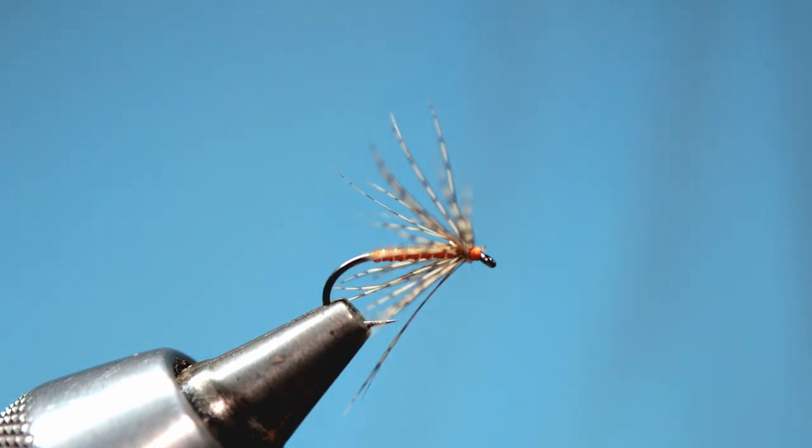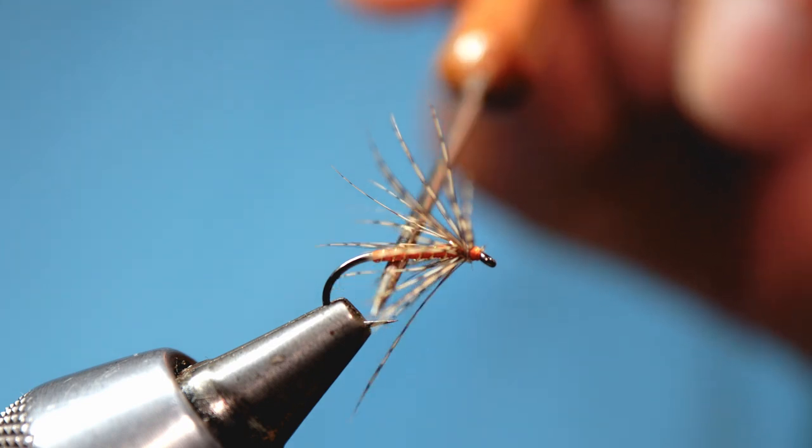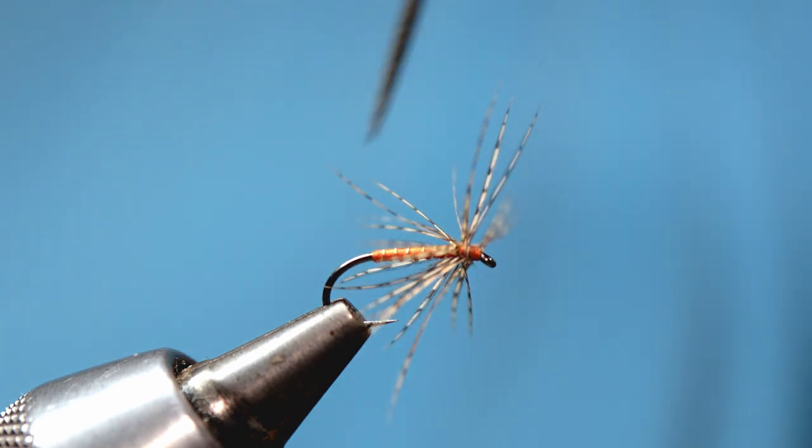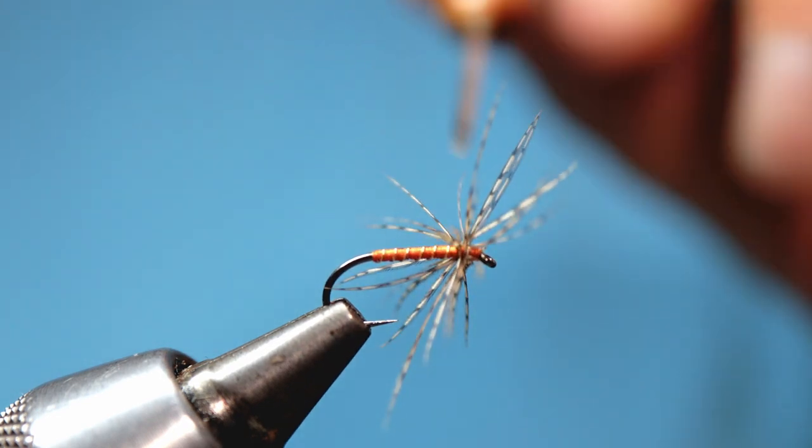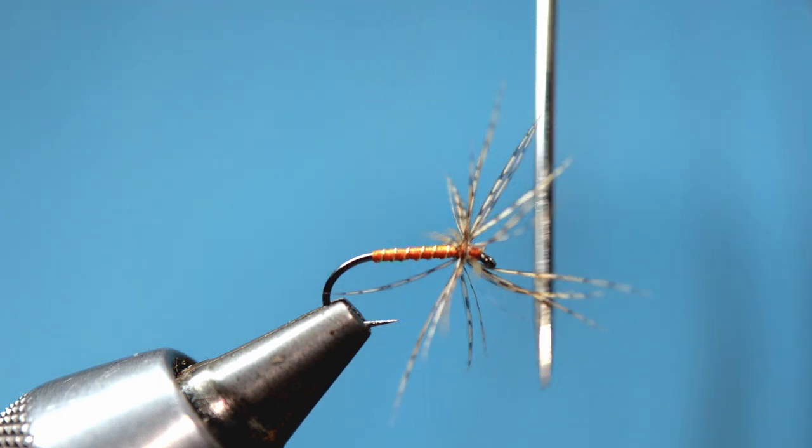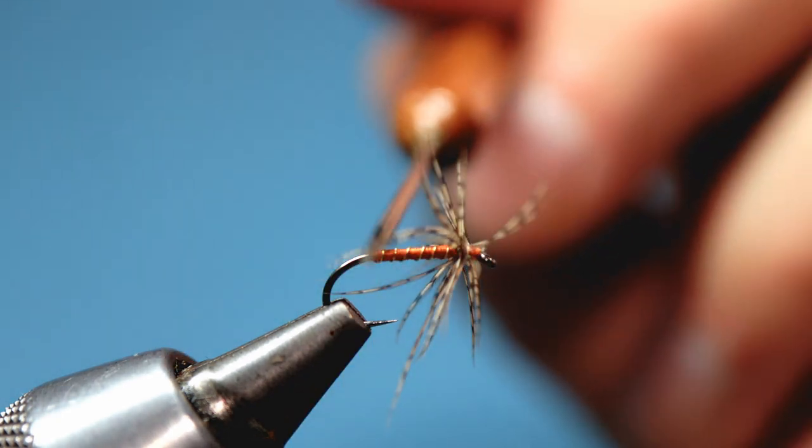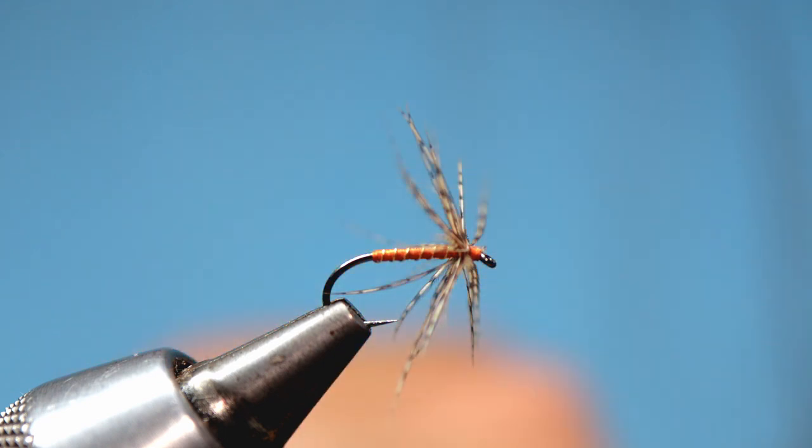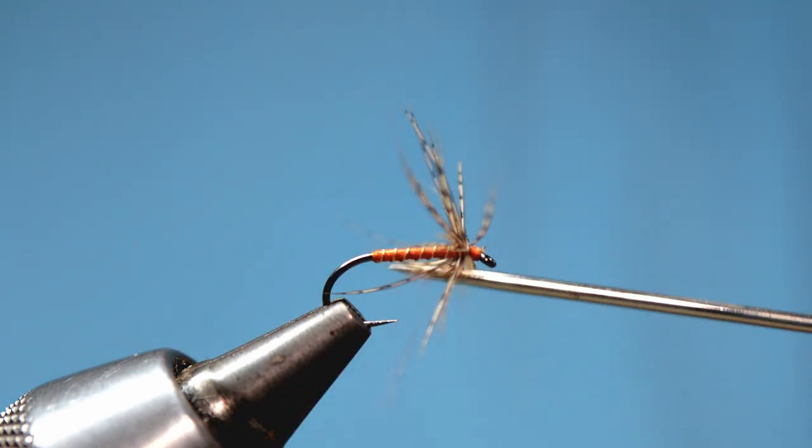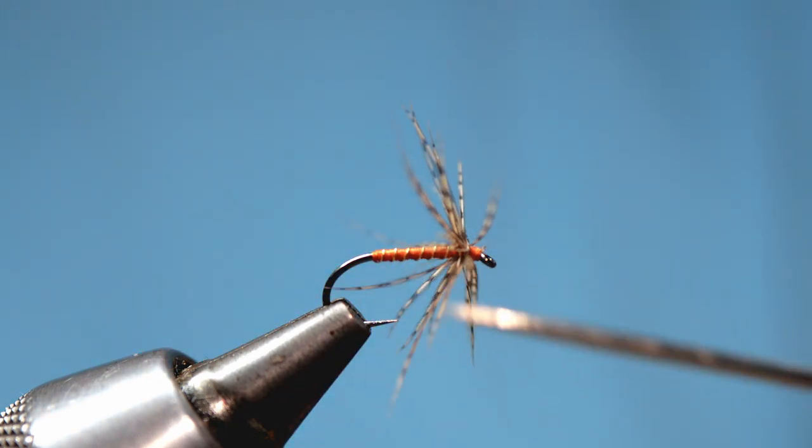Come in with your bodkin if you want and just simply fret those hackles back into a more vertical orientation if you want. Of course you can varnish the head of the fly. And there we have shall we say a more modern version of the partridge and orange.